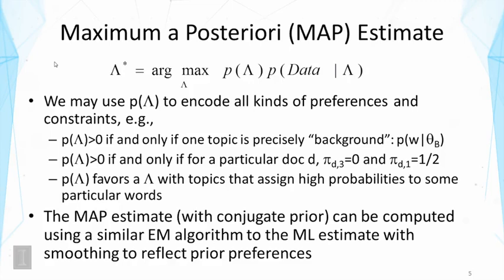This is a combination of the likelihood of data and the prior. What will happen is that we're going to have an estimate that listens to the data and also listens to our prior preferences. We can use this prior, which is denoted as p of lambda, to encode all kinds of preferences and constraints. For example, we can use this to encode the need of having precisely one background topic. This can be encoded as a prior because we can say the prior for the parameters is only non-zero if the parameters contain one topic that's equivalent to the background language model. In other cases, the prior says it's impossible. So the probability of that kind of model setting would be zero according to our prior.